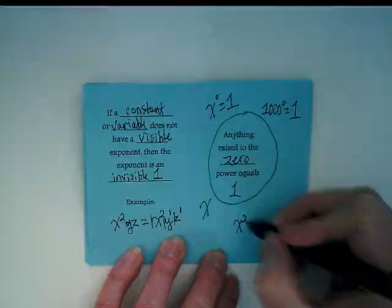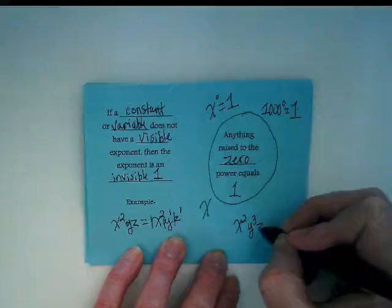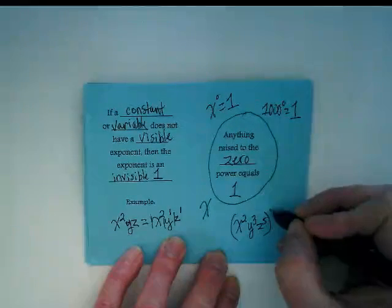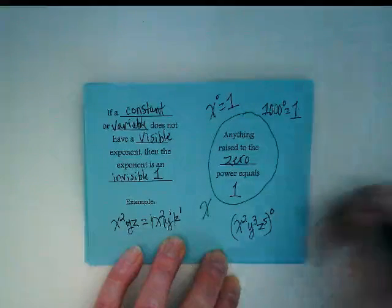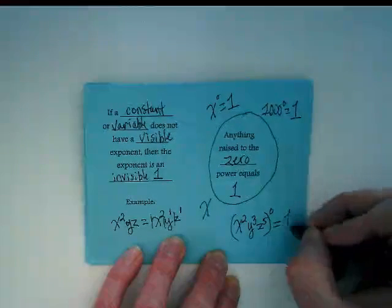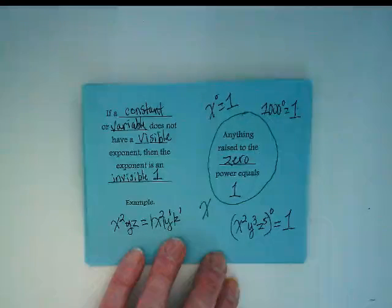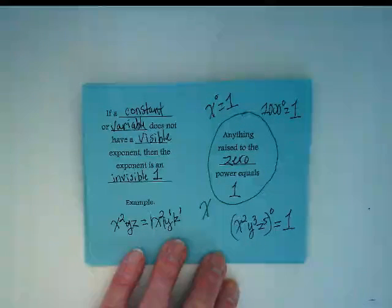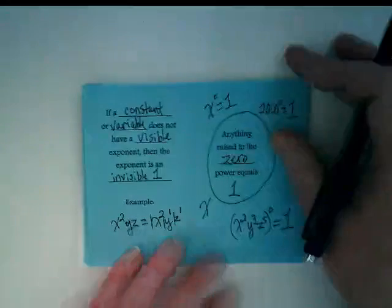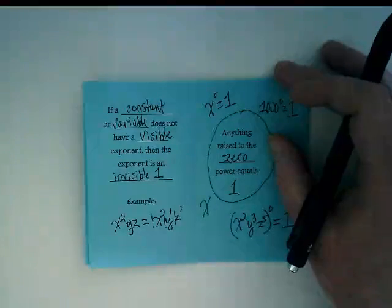If I have x squared, y to the third, z to the fifth, raised as a power to a power, and that new power is a zero, that whole thing equals one. Okay. I like that.